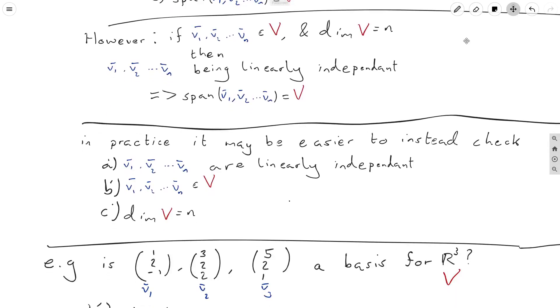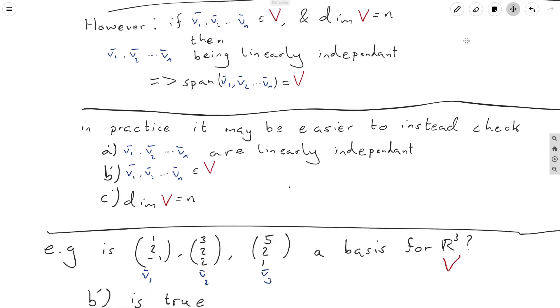So for example, is (1, 2, -1), (3, 2, 2), and (5, 2, 1) a basis for R³? So v1 is (1, 2, -1), v2 is this vector, and v3 is this vector, and our vector space is R³. Well, let's look at these conditions.